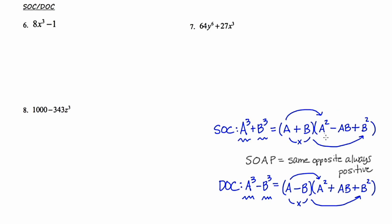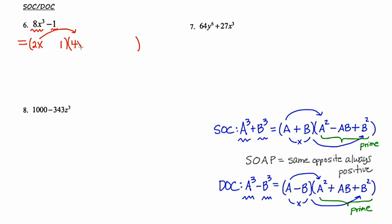Let's take a look at example six. Example six is a candidate for the DOC technique because it's a difference and both the first and last terms are perfect cubes. I'm going to set up my binomial times my trinomial. The cube root of 8x cubed is 2x. The cube root of 1 is just 1. The first result squared is 4x squared. The product of both results gets written in the middle, which will be 2x. The last result squared is going to be 1. And because we use SOAP — same, opposite, always positive.